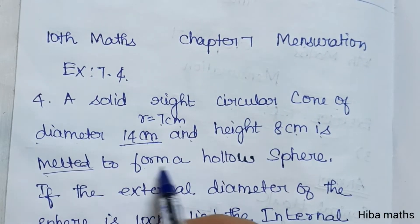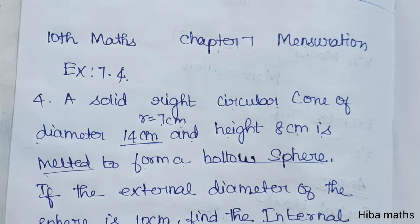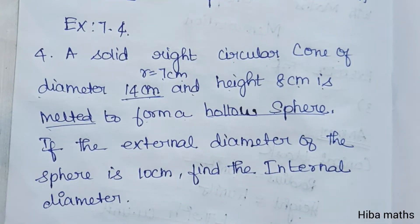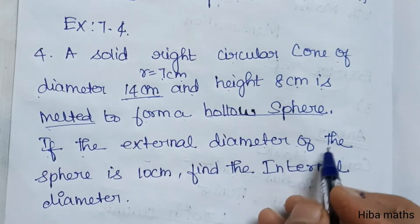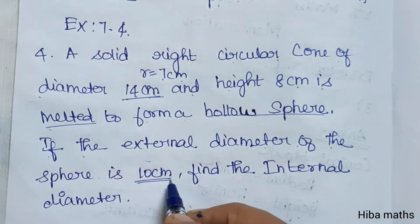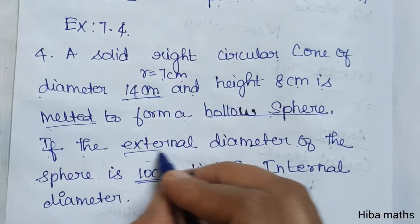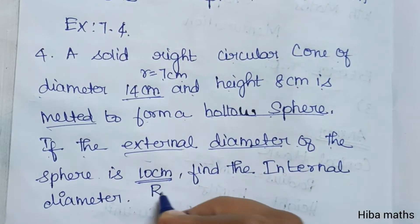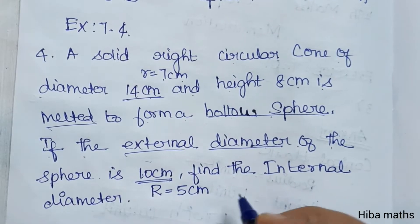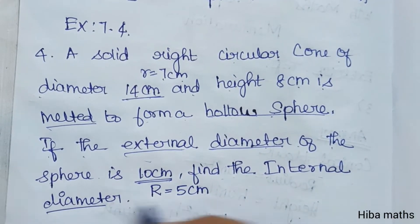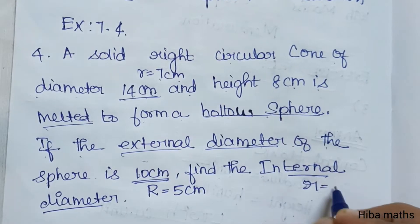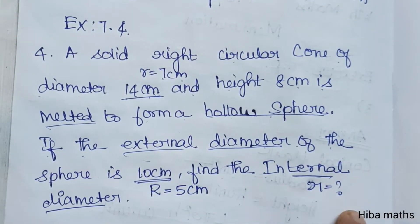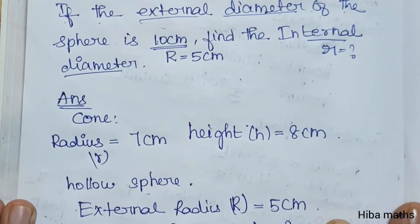The cone is melted to form a hollow sphere. If the external diameter of the sphere is 10 centimeters, then the external radius capital R is 10 divided by 2, which is 5 centimeters. We need to find the internal diameter, small r.